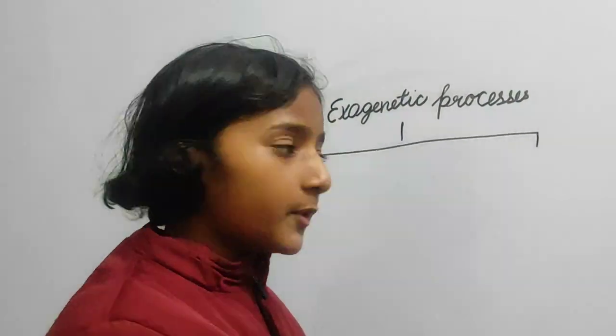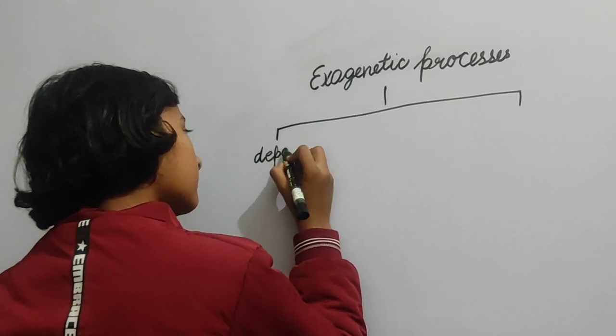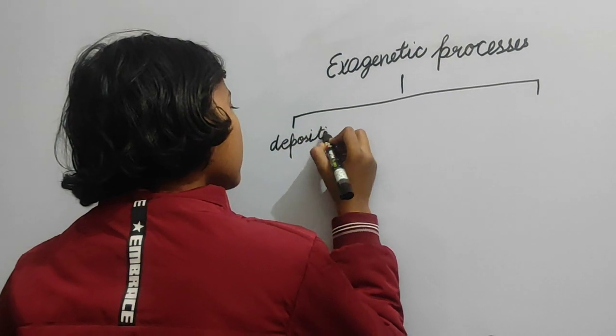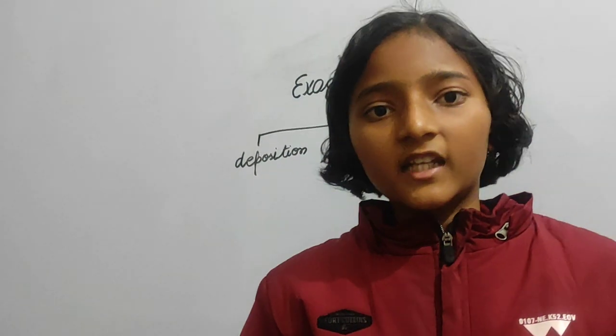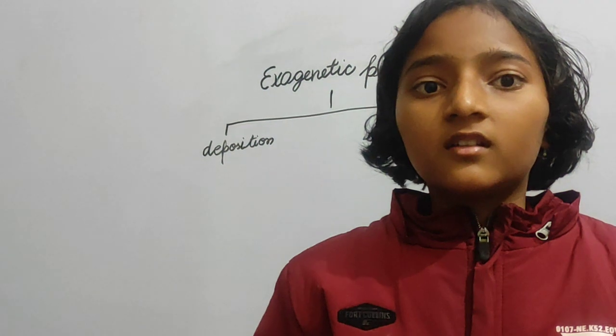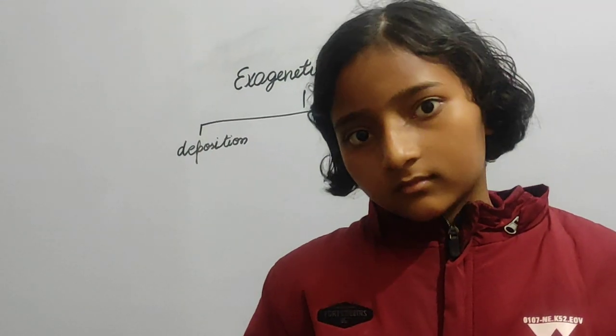The first one is deposition. Let me define deposition with our daily life situations. You know the northern plains in India — they are formed by the deposition of Ganga, Yamuna, Indus, and Brahmaputra rivers.